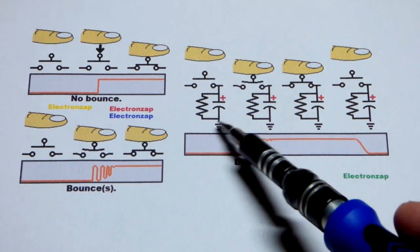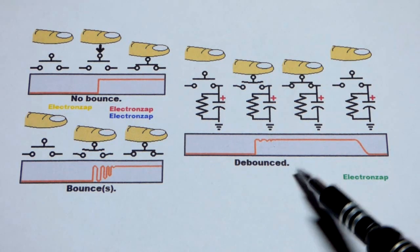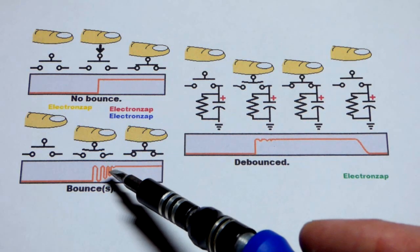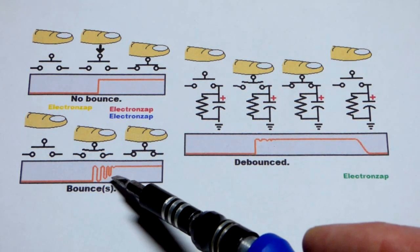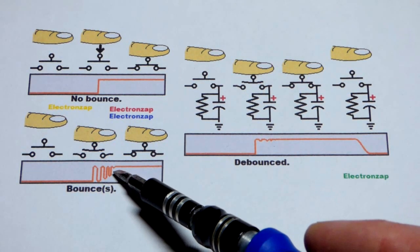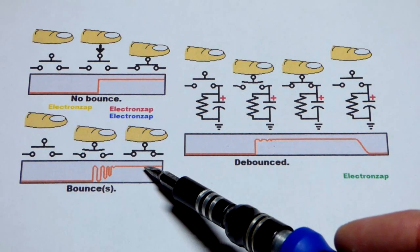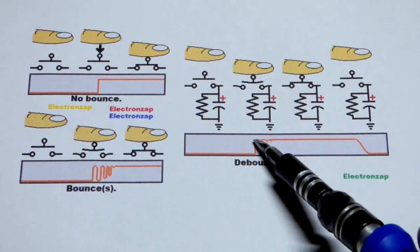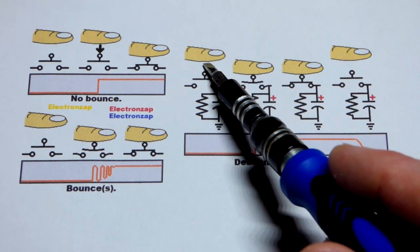So we're going to debounce it where we will get a pretty steady voltage. At least it won't drop enough—probably about halfway or less of the supply voltage—where it thinks it's a low input. We're going to keep it above somewhere about half of the supply voltage or higher so that it thinks that it is just a steady high input, right there, by adding a capacitor.